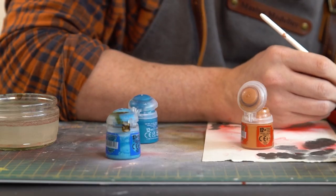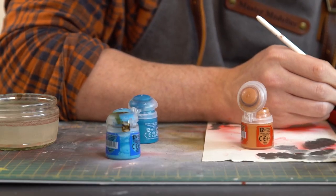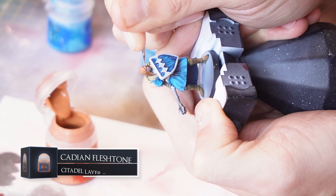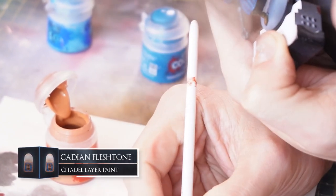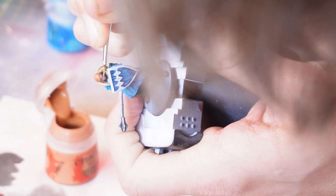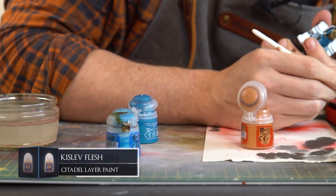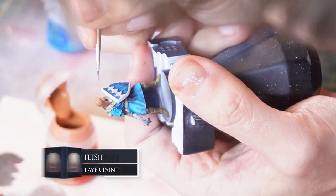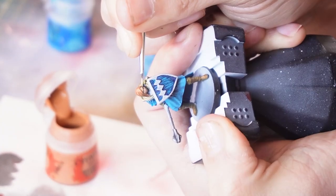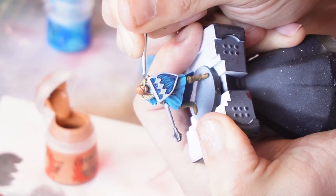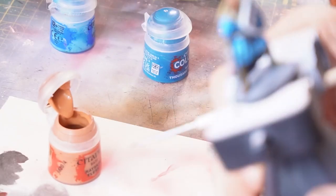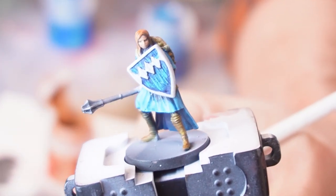And with the face, I'm going to use the sort of main mid-tone of Cadian Fleshtone and boost up these brighter areas. So the brow, forehead, the nose, the chin, and the cheekbones. And same again, moving into the Kislev flesh, which will be our brighter highlight tone. And boost up those same kind of areas. Just a bit more concentrated. Okay, there's our cleric with the face.